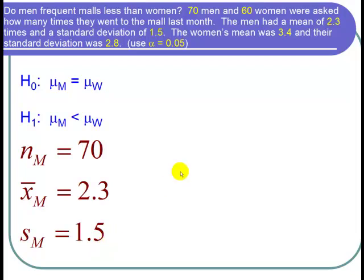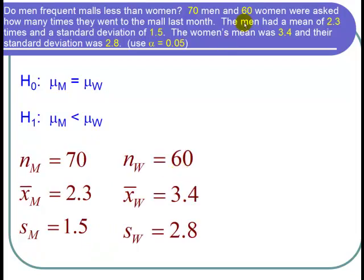So now the cast of characters for the women. There were 60 women asked, so n sub w equals 60. The women's mean was 3.4, so x bar sub w equals 3.4. And the women's standard deviation was 2.8. And again, this is for these 60 women. It's the sample standard deviation for the women. So s sub w equals 2.8.